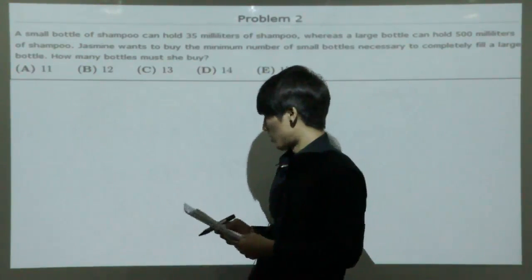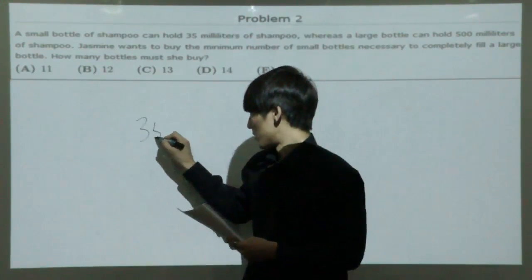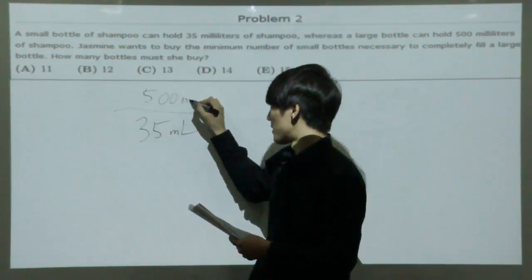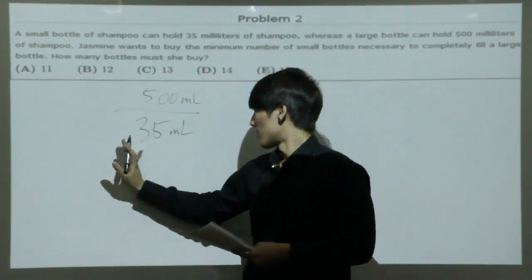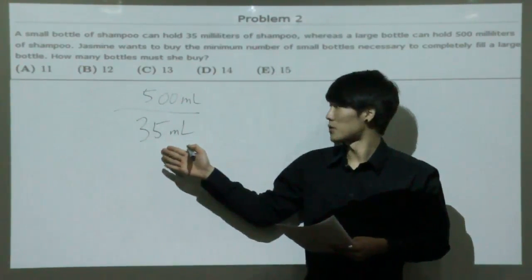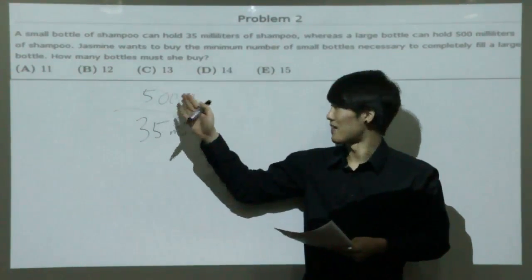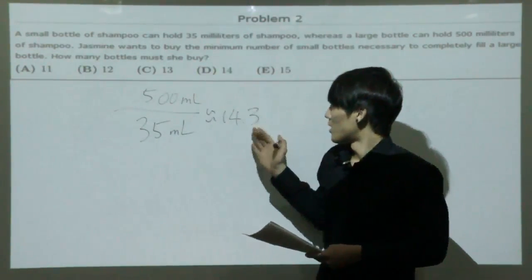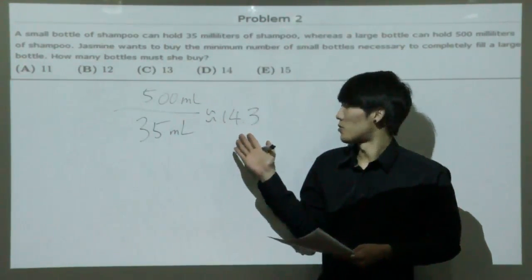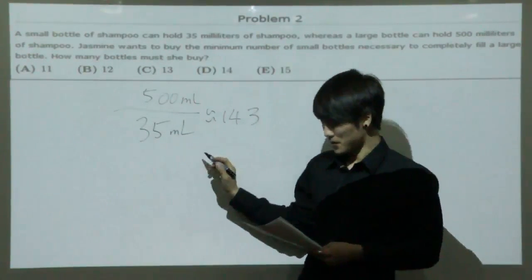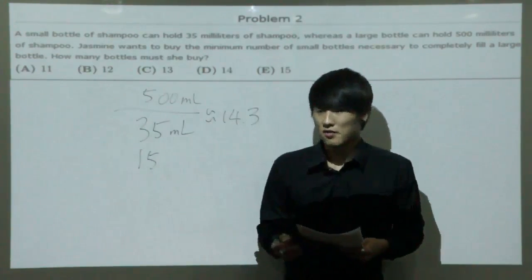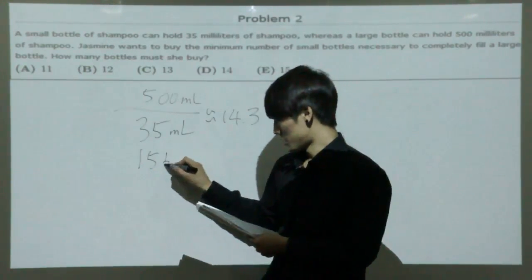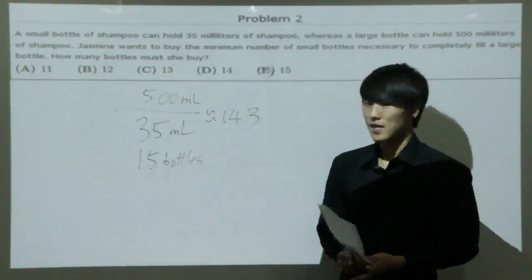So the small one can hold 35 milliliters, the big one can hold 500 milliliters. Since you have to get the number of 35 milliliter bottles to fill 500, you divide 500 over 35 to get approximately 14.3. But you can't fill 14.3 bottles, you would need 15 bottles. If you go to market, they won't be selling 0.3 bottles. That means you would need 15 bottles, which is choice E.